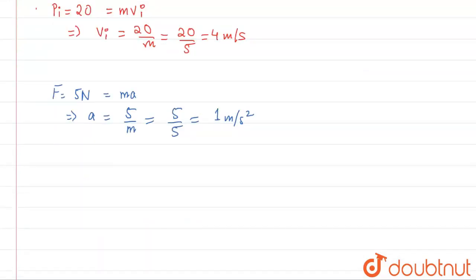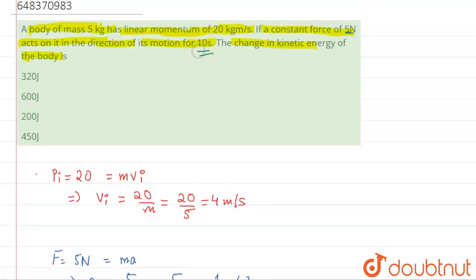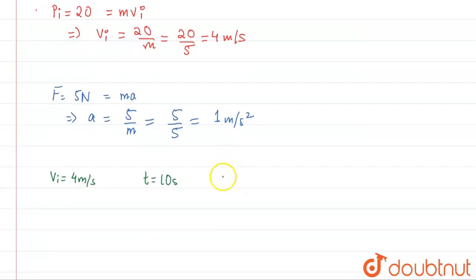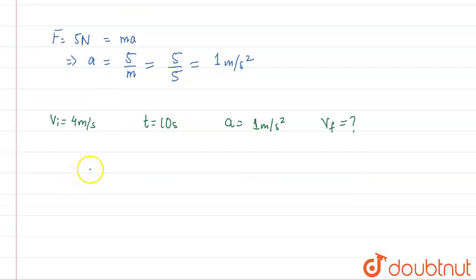Now we have to find out final velocity. What are the things given to us? Initial velocity is 4 meter per second, and time is given as 10 seconds. If you see in the question, you can see 10 seconds is given. Acceleration is 1 meter per second square, and we have to find final velocity. So what will we do? We'll use the first equation of motion, that v_f is equal to v_i plus at.